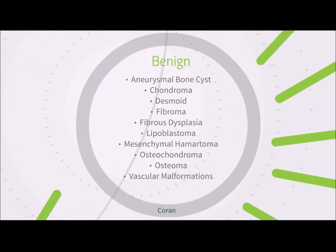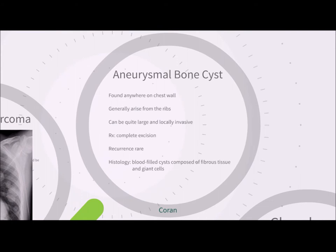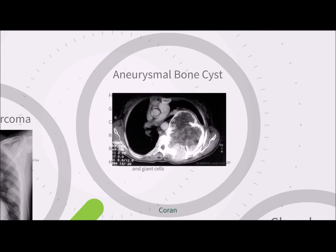Benign chest wall lesions: Aneurysmal bone cysts can be found anywhere on the chest wall but generally arise from the ribs. They can be quite large and locally invasive, and treatment is complete excision. Recurrence is rare. Histology shows blood-filled cysts composed of fibrous tissue and giant cells. The CT scan here shows a large expansile mass from the posterior left fifth to sixth rib area, causing destruction of the associated transverse process and left half of the fifth dorsal vertebra, with a large intrathoracic and posterior mediastinal component.